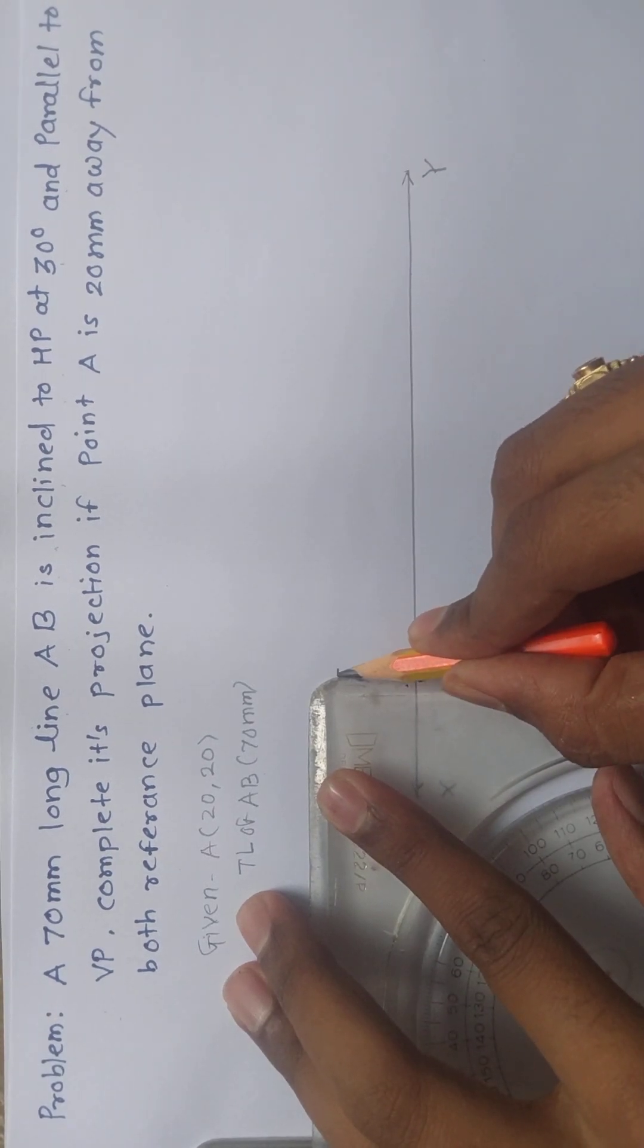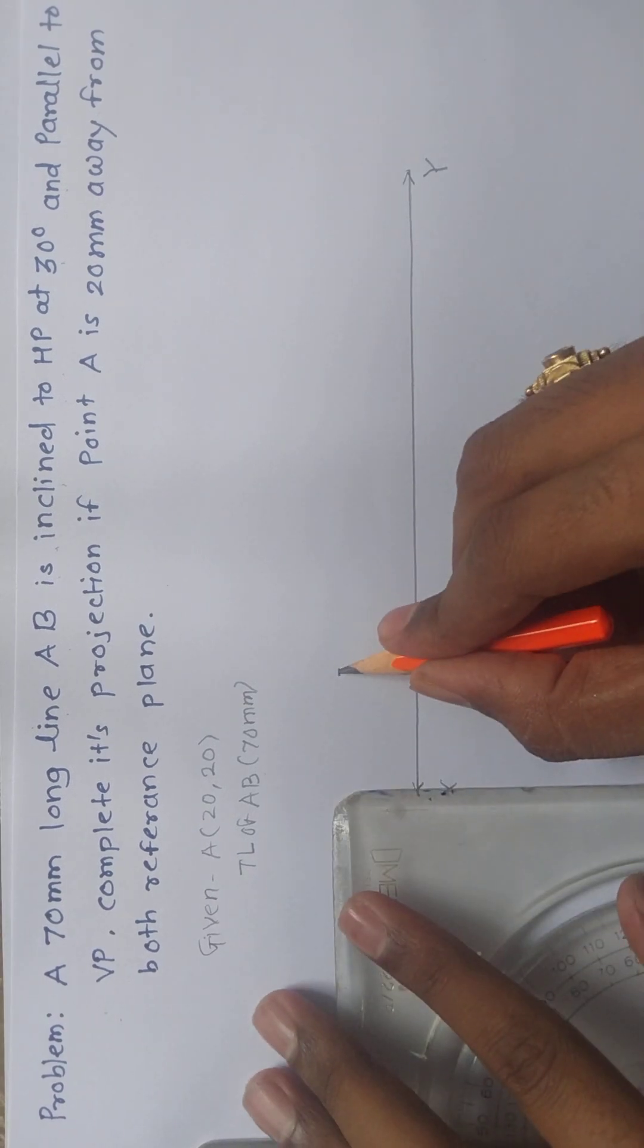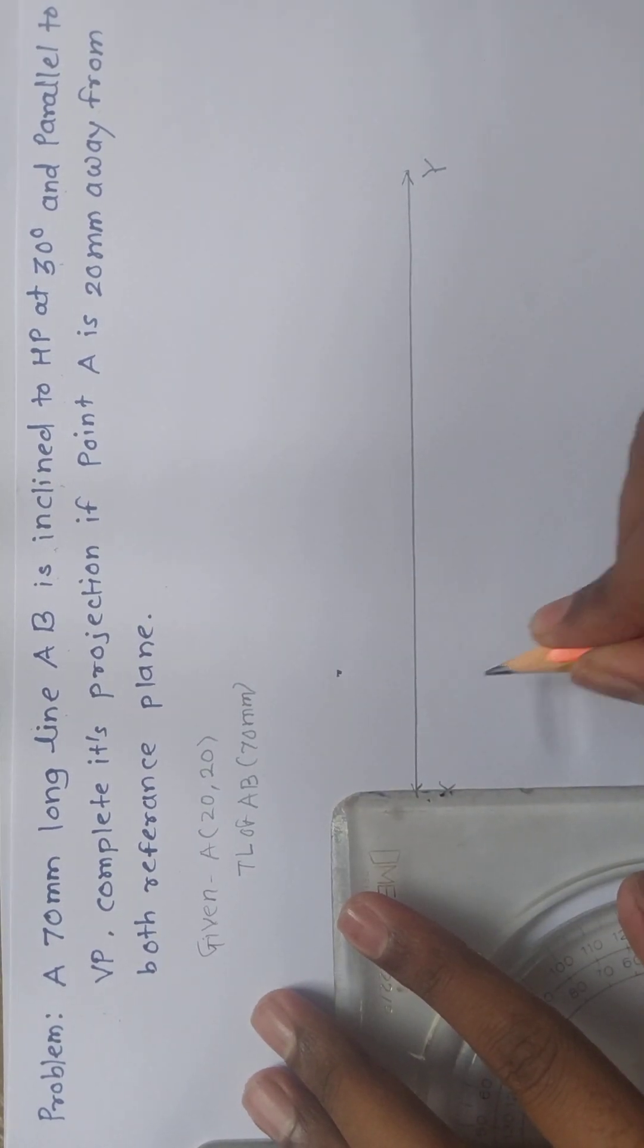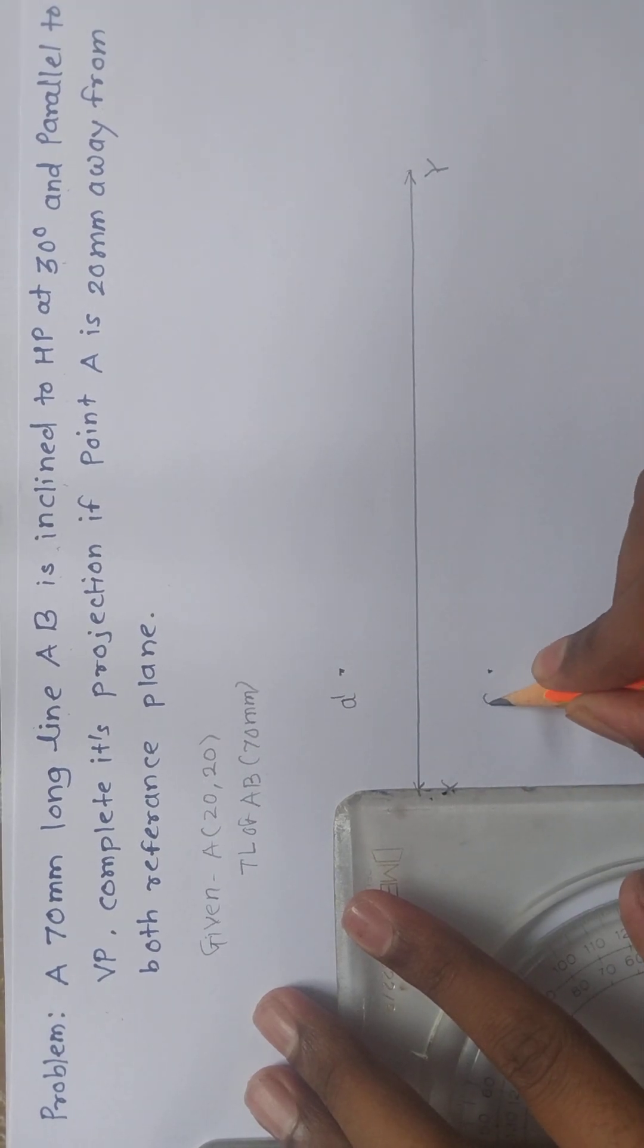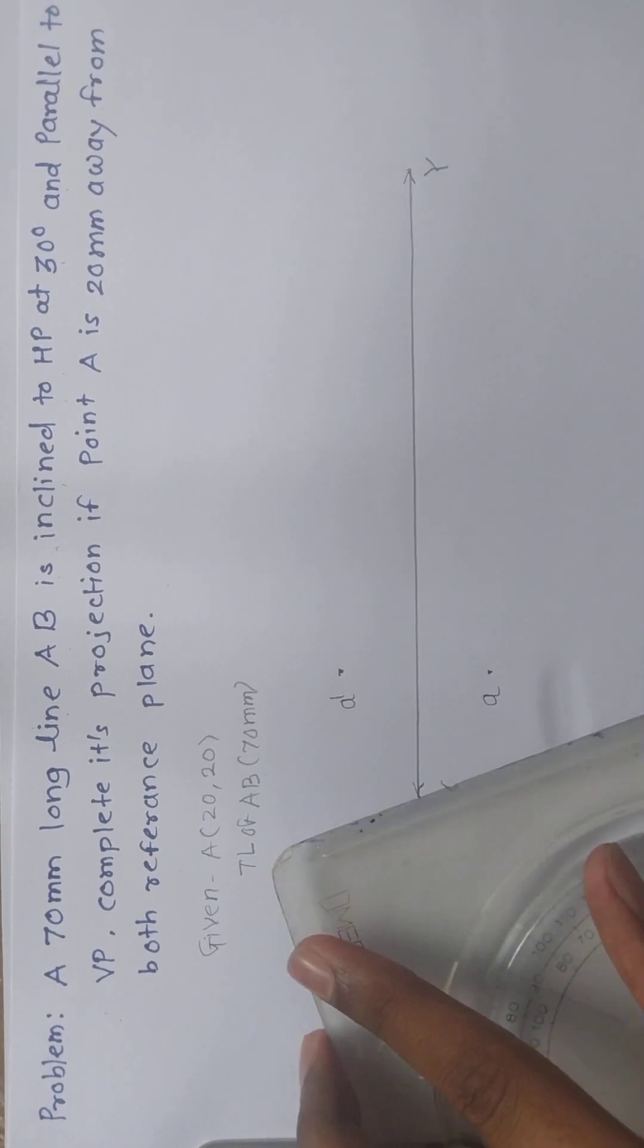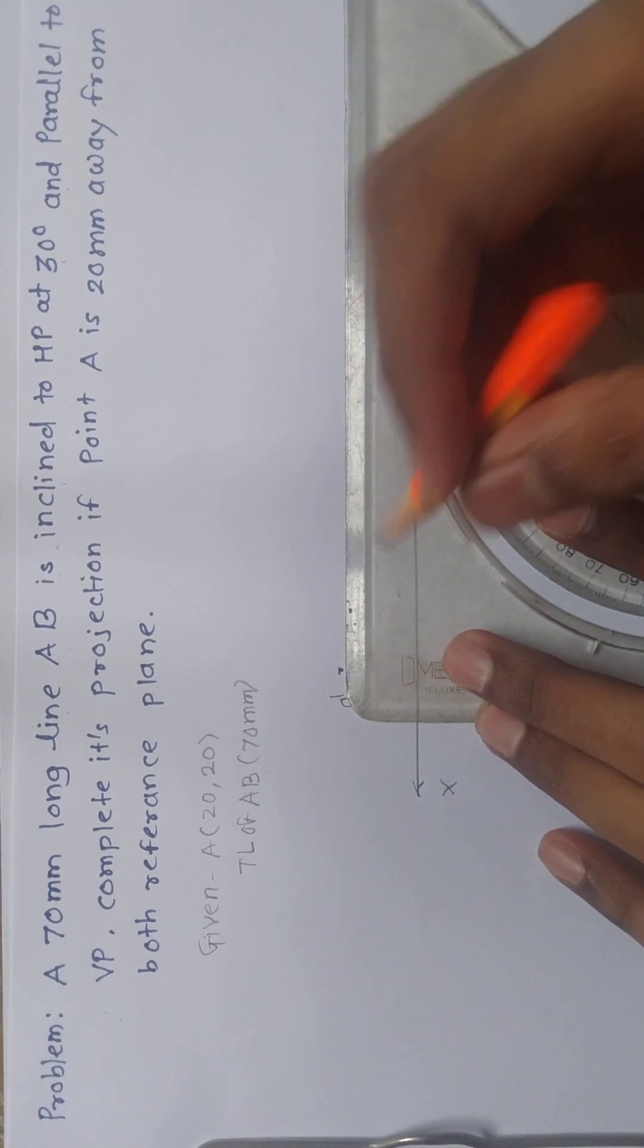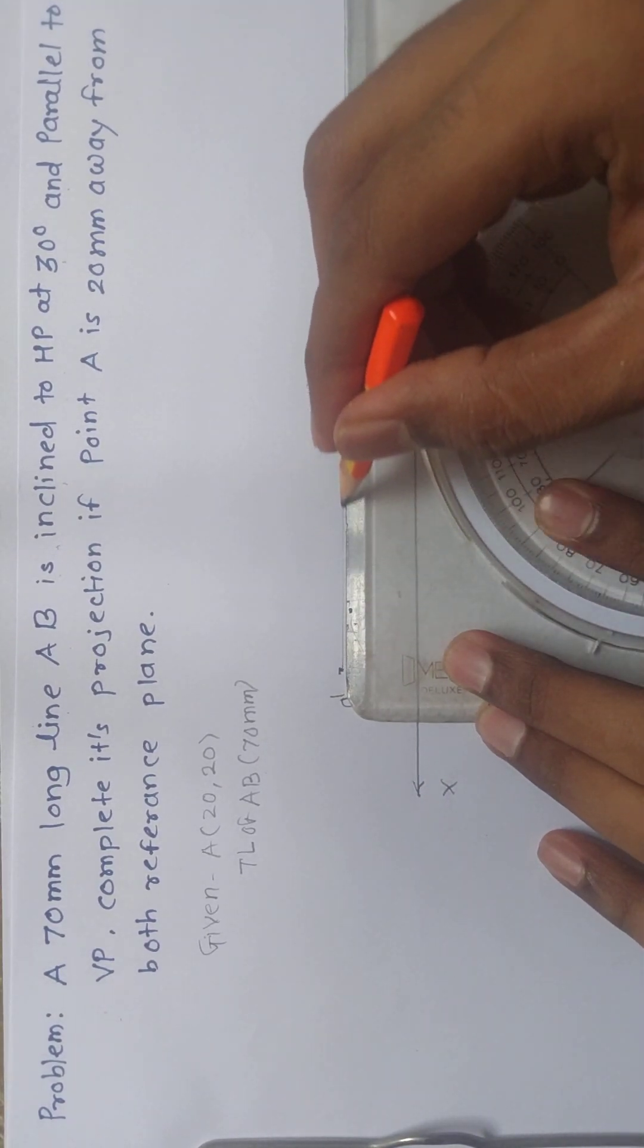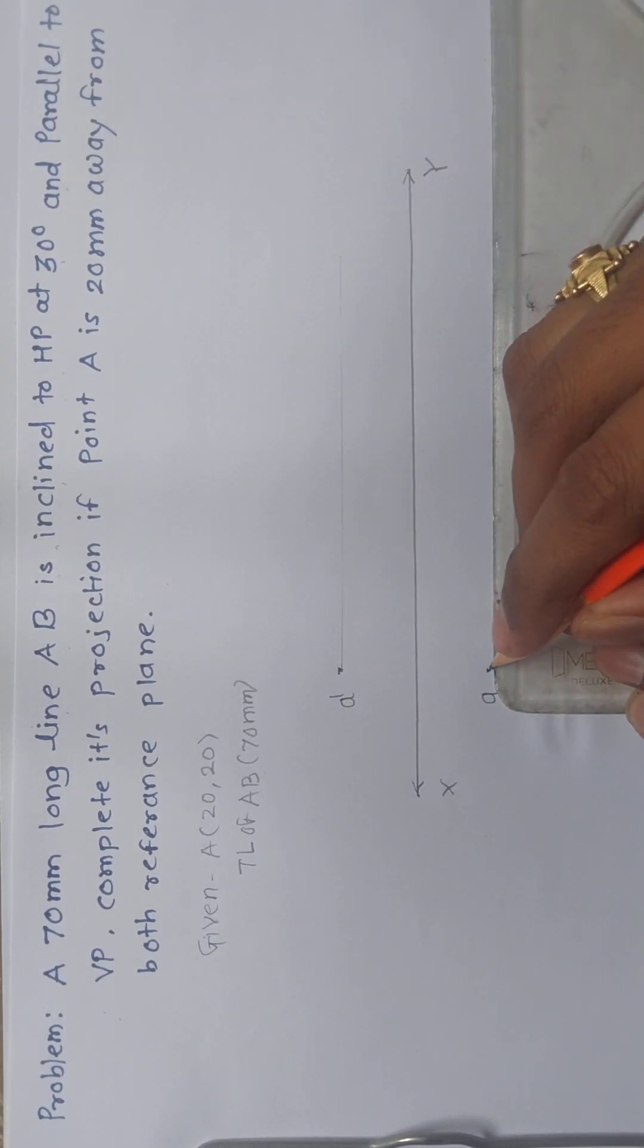It will be above 20mm and below 20mm. This will be the A dash point and this will be the A point. Now you can draw a faint line, very faint line, just for our reference.